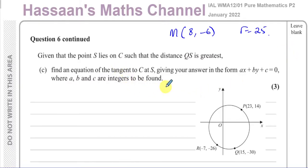This question here, we've already found the midpoint of this circle and the radius is 25 in parts A and B. Now part C says, given that the point S lies on C such that the distance QS is greatest, find an equation of the tangent to the circle C at S, giving your answer in the form AX plus BY plus C equals zero, where A, B and C are integers to be found.